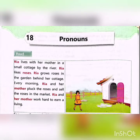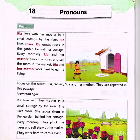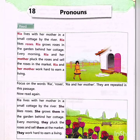All right, now let us read the second passage. Ria lives with her mother in a small cottage by the river. She grows them in the garden behind her cottage. Every morning, they pluck the roses and sell them at the market. They work hard to earn a living.